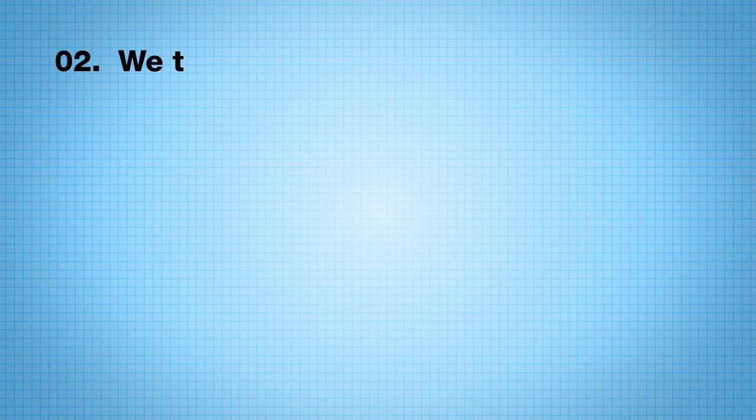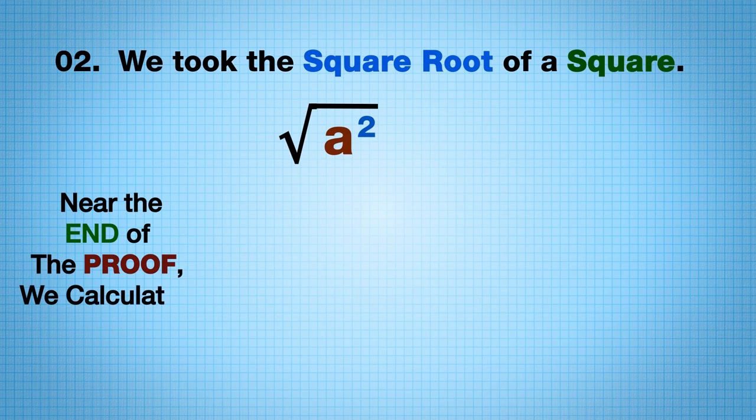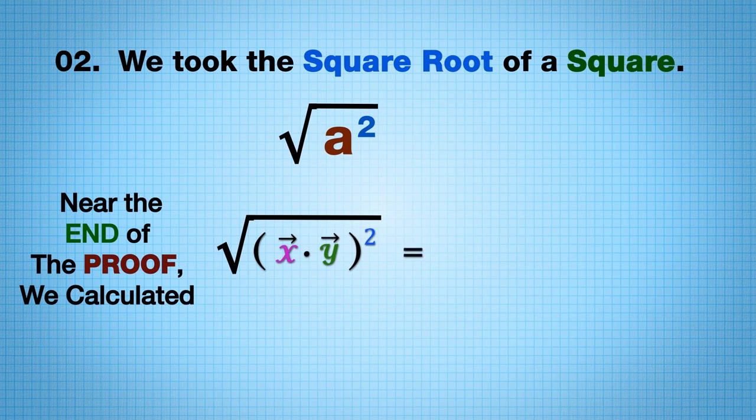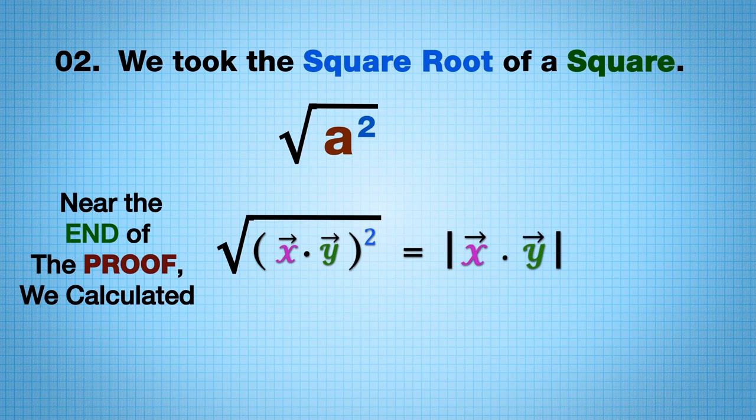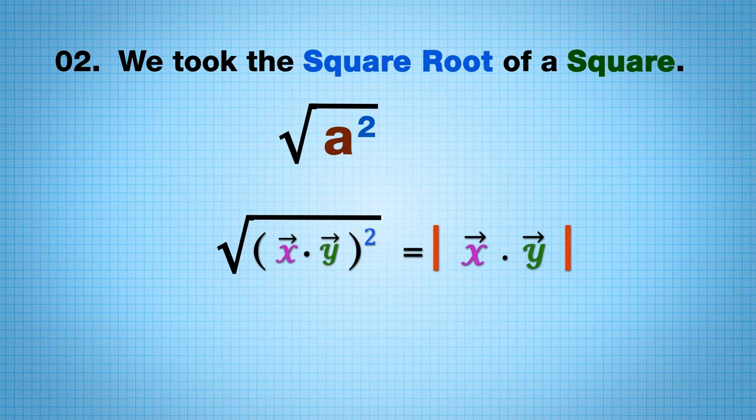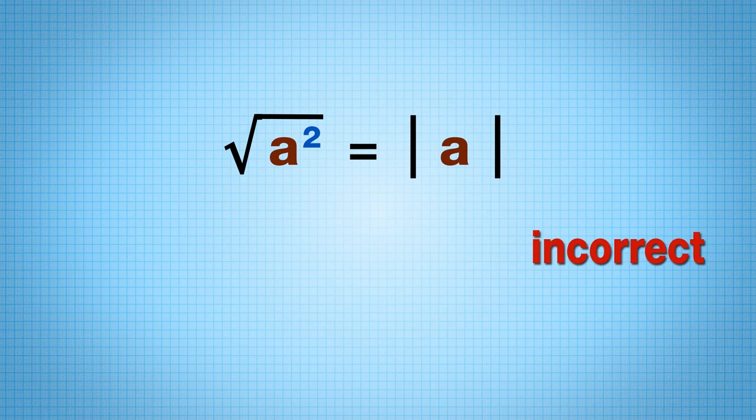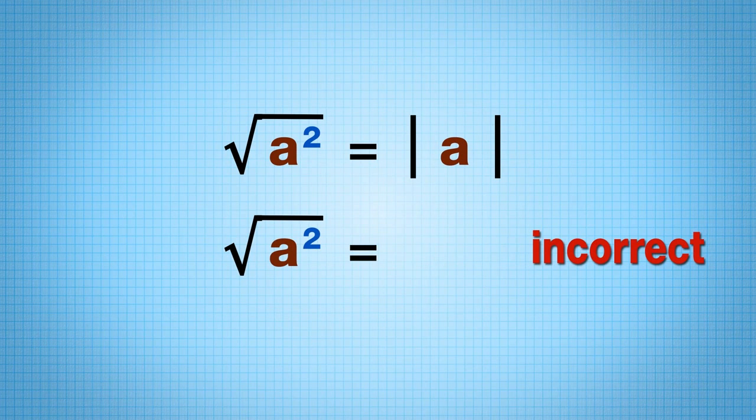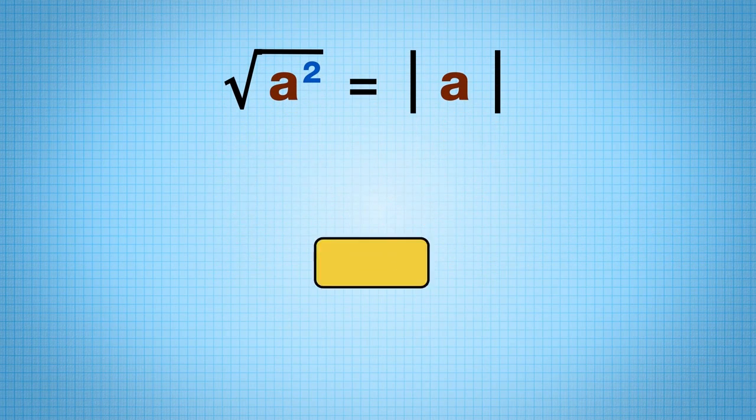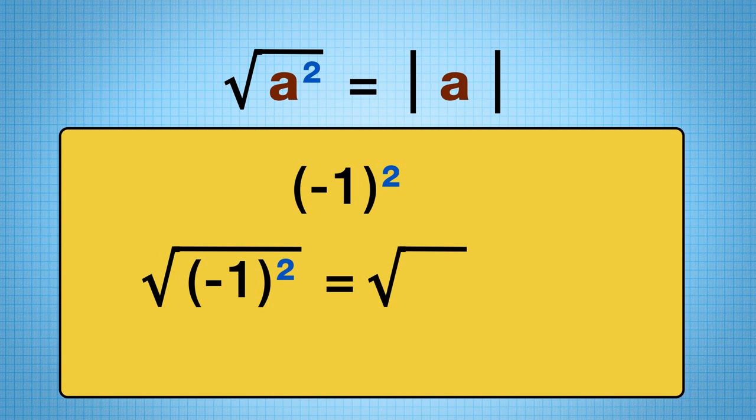Secondly, we took the square root of a square. Near the end of the proof, we calculated the square root of x dot y squared as the absolute value of x dot y. Note the absolute value sign. Generally, the square root of a squared is absolute value of a. It is incorrect to write square root of a squared is a. Just consider negative one squared. The square root of negative one squared is one, not negative one.